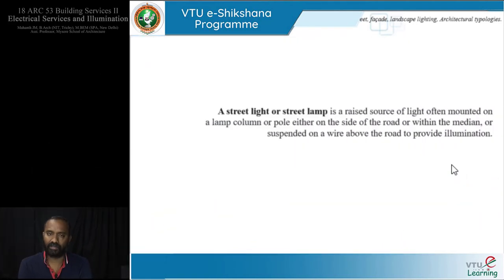With that we cover luminaires and lighting methods, and move on to street lighting, facade lighting, landscape lighting, and architectural typologies. A street light or street lamp is a source of light often mounted on a lamp pole on the side of the road or within a median, or suspended on a wire above the road, to provide illumination.